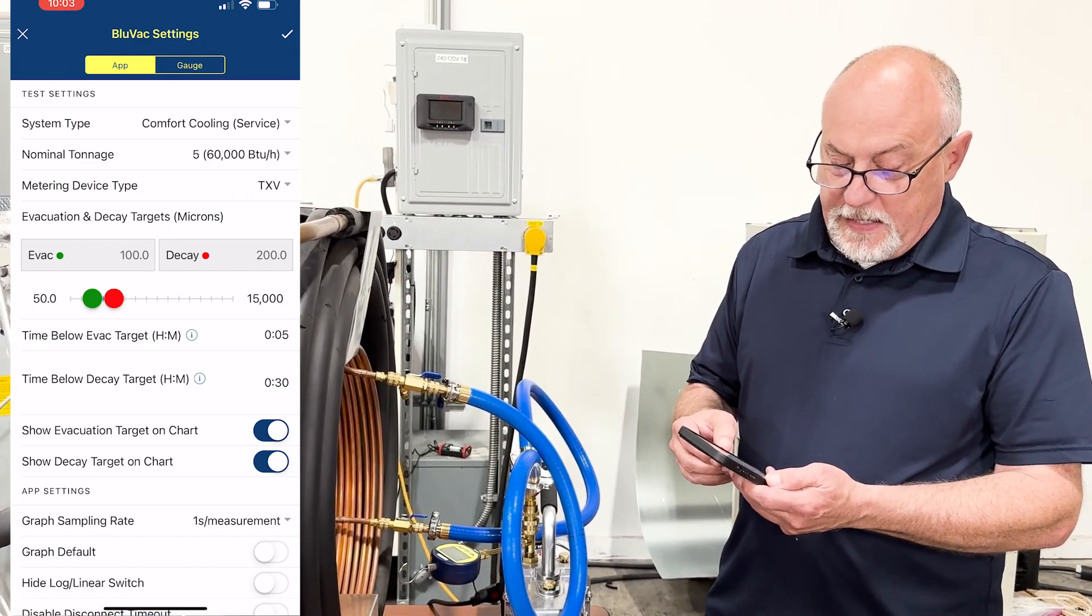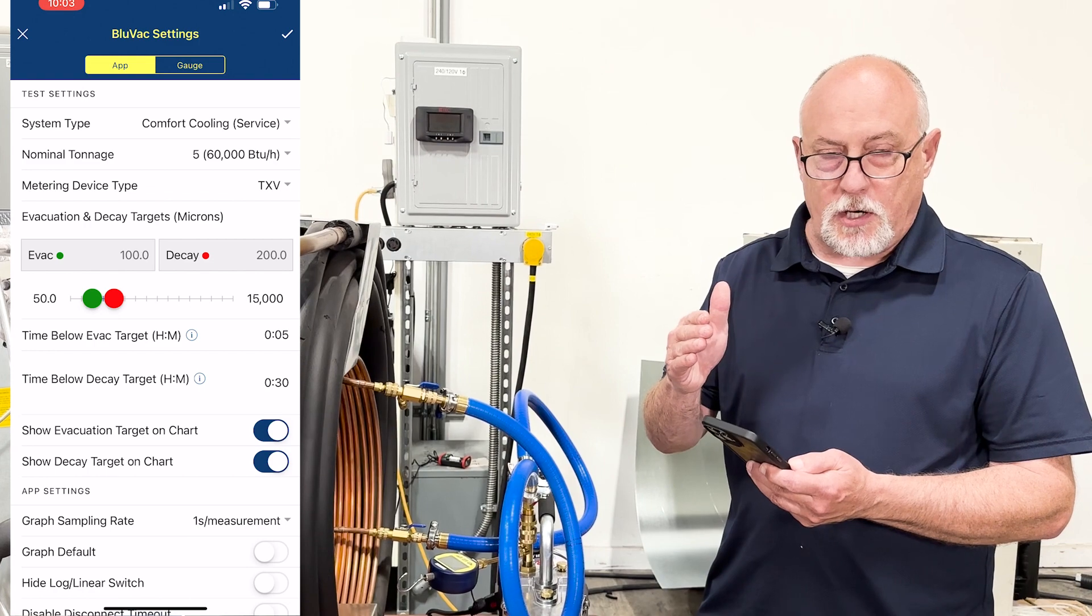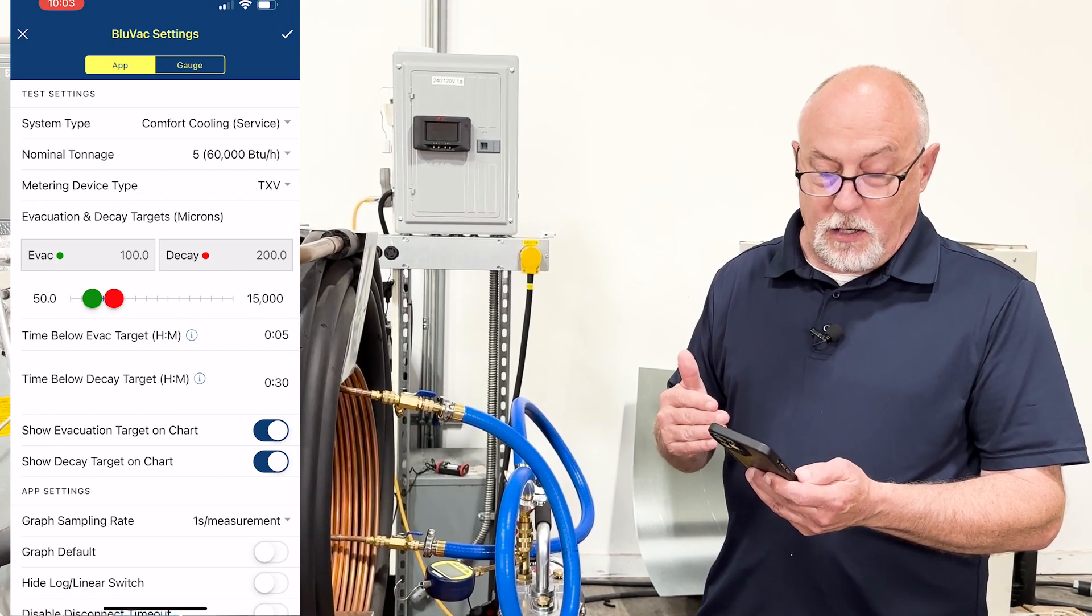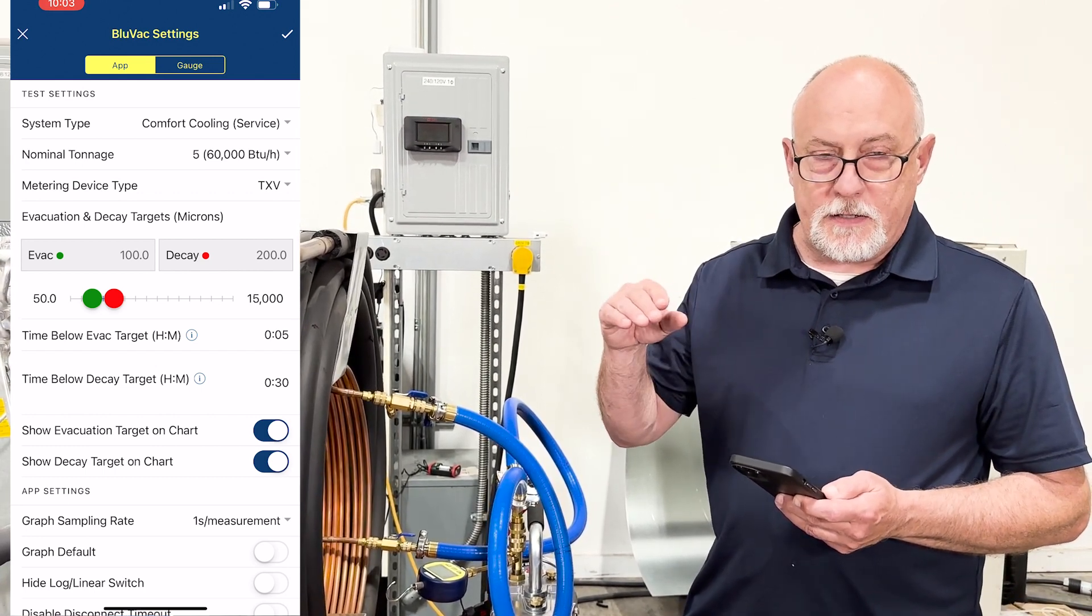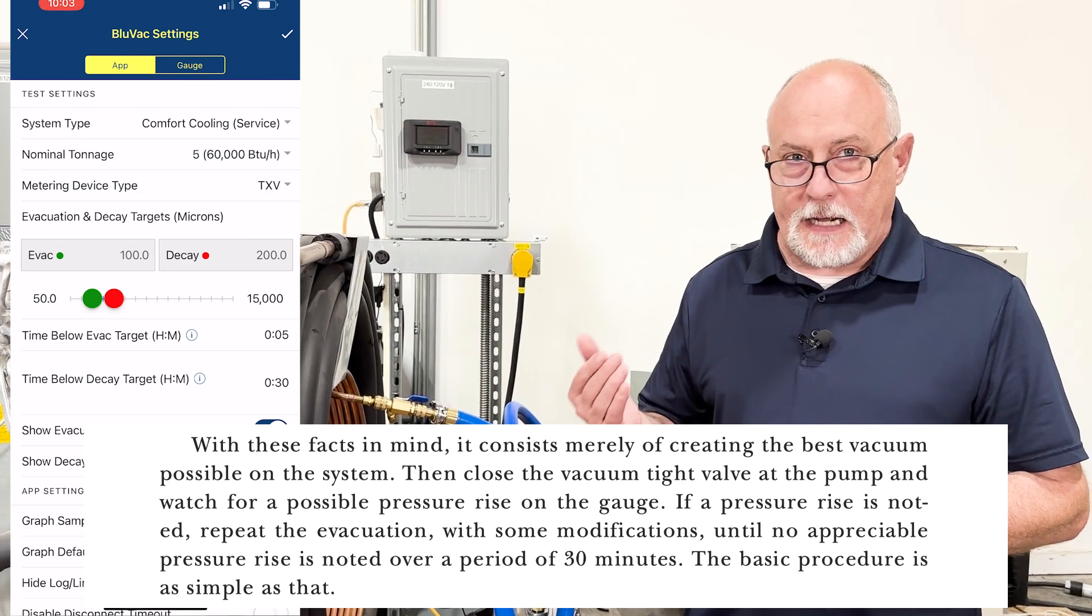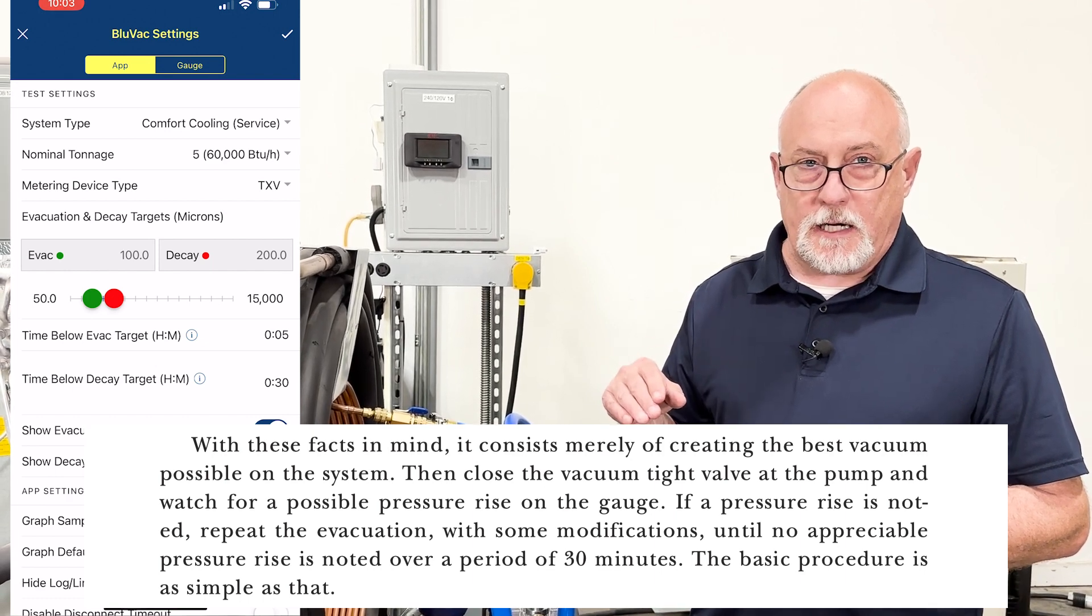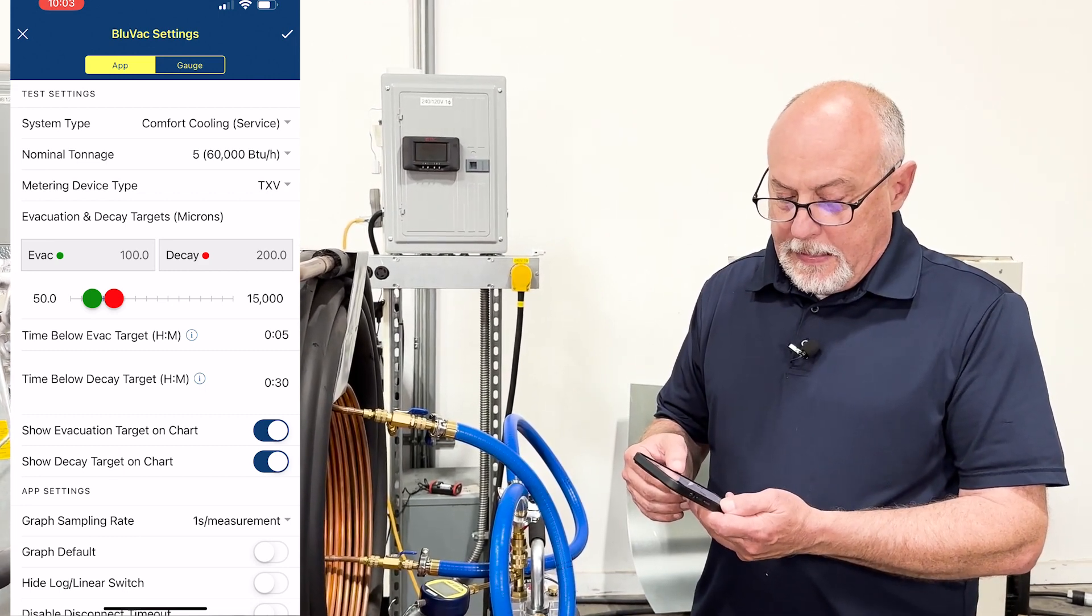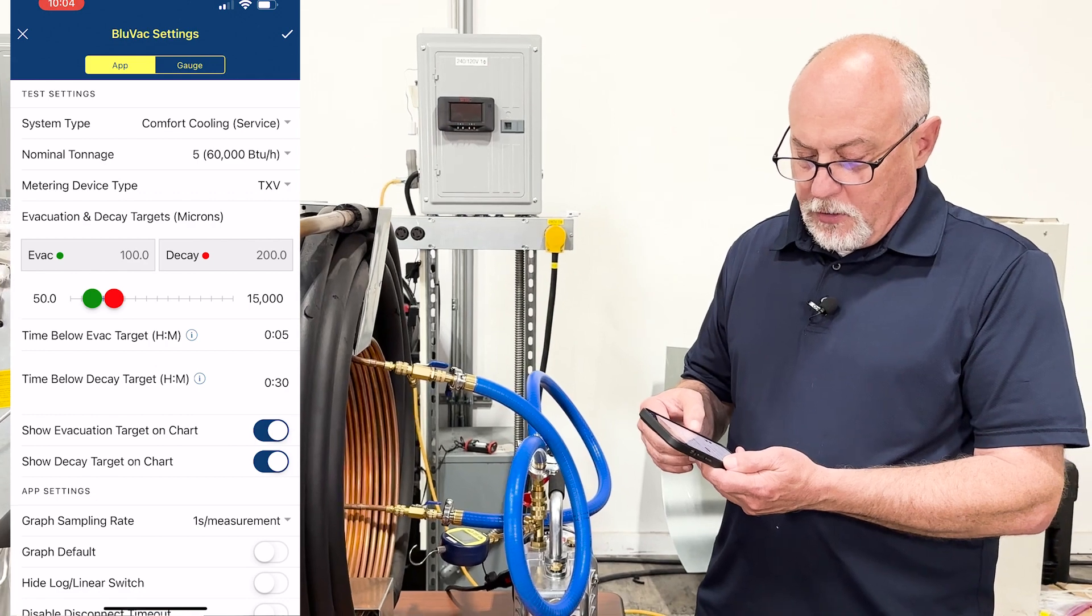Now there's a time below target setting which I have set at five minutes. So that means when the graph as it's plotting down hits the 100 micron target, we're going to hold below that for five minutes and pull down below 100 microns. And then I have my time below decay target or my decay time set for 30 minutes. Now what we wanted to do with this is make sure that there's no appreciable rise after 30 minutes. Back in the day we'd actually have to wait 30 minutes, and the BlueVac app has an algorithm in it that actually watches the rise over run and can tell you in about 30 seconds to a minute if you're going to pass that 30 minute decay test.